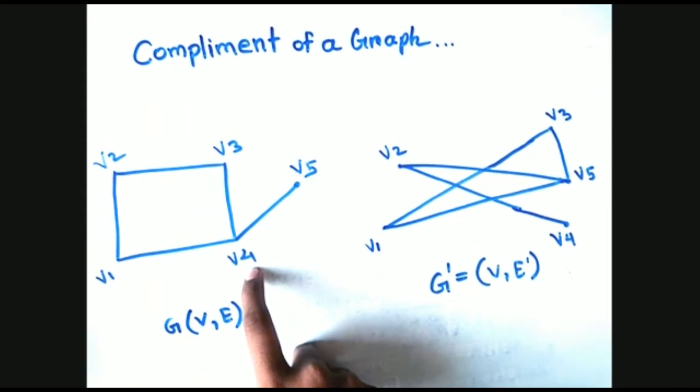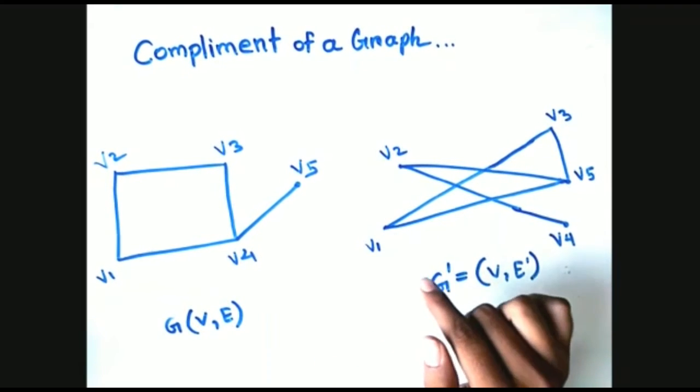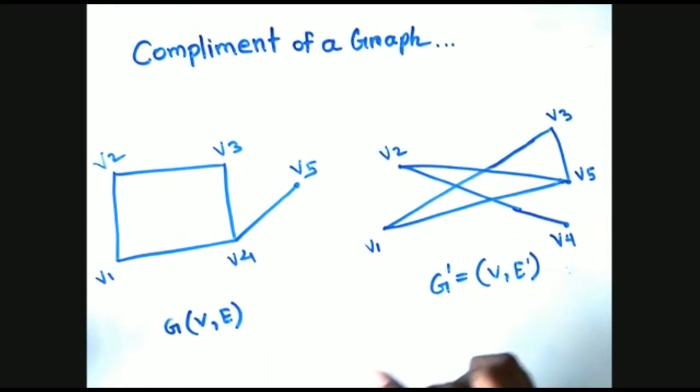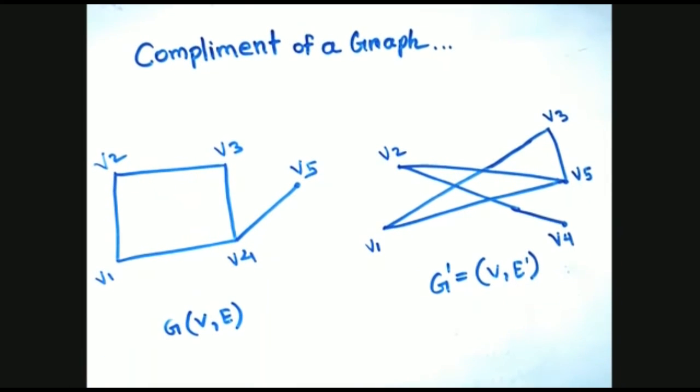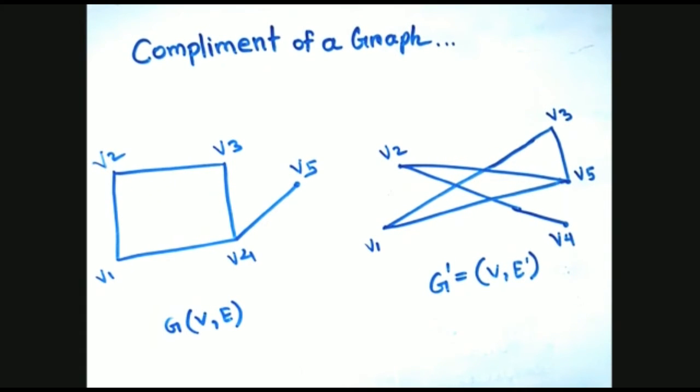For example, from vertex v2 to v4, no edge directly connects, so we join the edge here. Similarly, all edges can be joined and we can form the complement of graph G. I hope you understand.